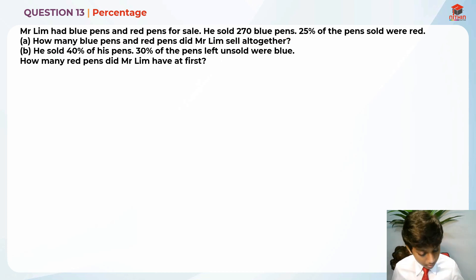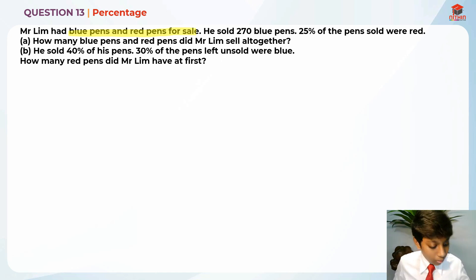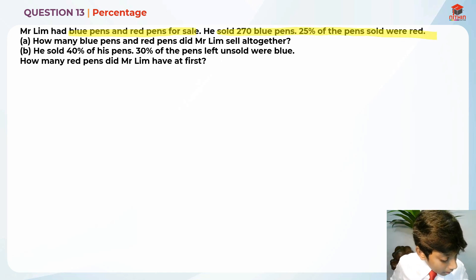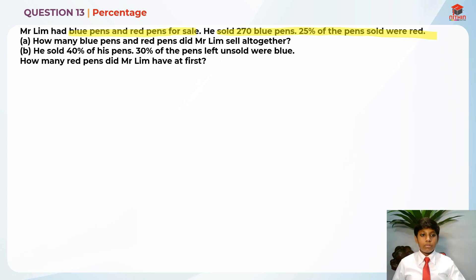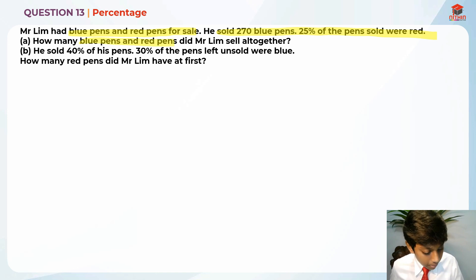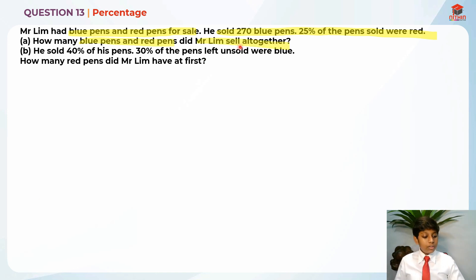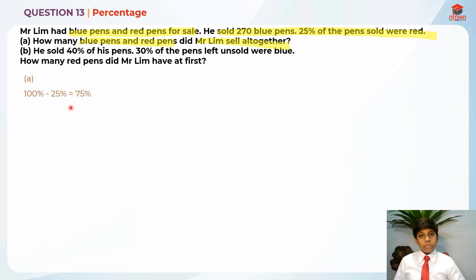Let's highlight the key information. Mr. Lim had blue pens and red pens for sale. He sold 270, and 25% of the pens sold were red. How many blue pens and red pens did Mr. Lim sell altogether? So since 25% of the pens sold were red, 100 minus 25% is 75%.